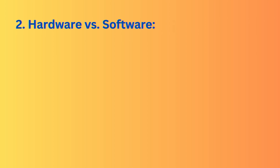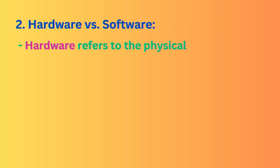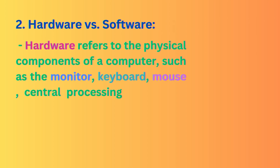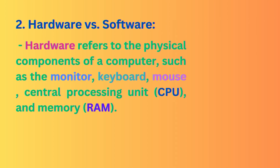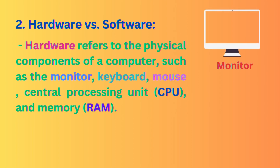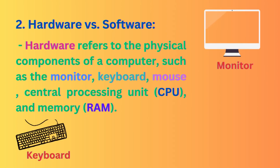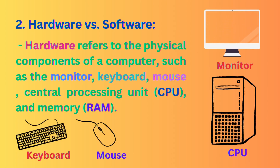Hardware vs. Software. Hardware refers to the physical components of a computer, such as the monitor, keyboard, mouse, central processing unit (CPU), and memory (RAM).